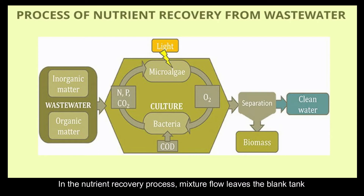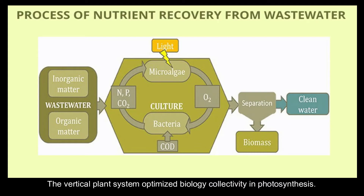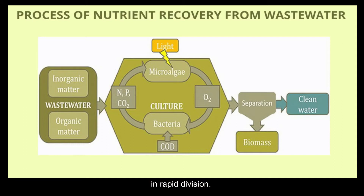In the nutrient recovery process, mixture flow leaves the plant tank and enters the vertical pond system. The greenhouse structure will provide a light source. The vertical plant system optimises biological collectivity in photosynthesis. The contaminated algae metabolise nitrogen, phosphorus, carbon dioxide, and other unwanted contaminants in rapid division.